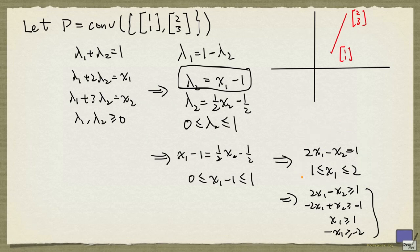And when x_1 is 1, we are at this point. And when x_1 is 2, we are at this point. And since x_1 can take on any value between 1 and 2, we get all the points in between. So this system does define this polytope.